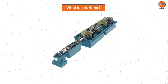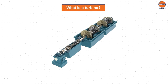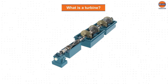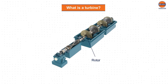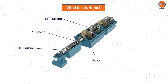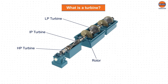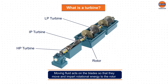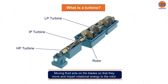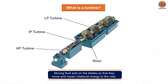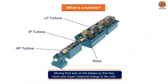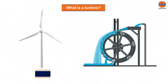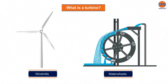In this power plant, the turbine is a turbo machine with at least one moving part called a rotor assembly, which is a shaft or drum with blades attached. Moving fluid acts on the blades so that they move and impart rotational energy to the rotor. Early turbine examples include windmills and water wheels.